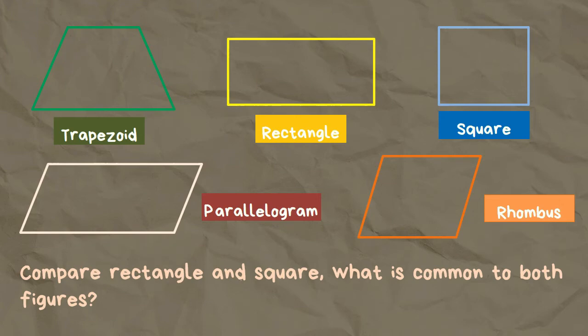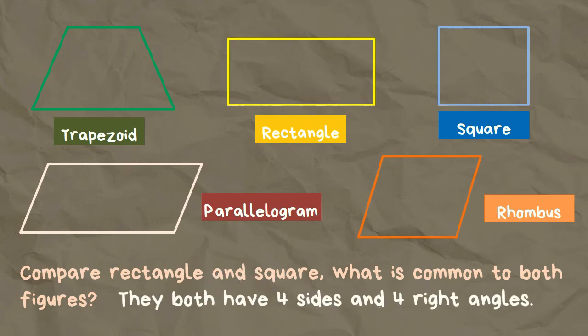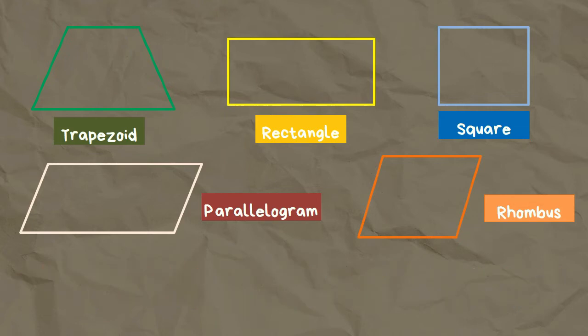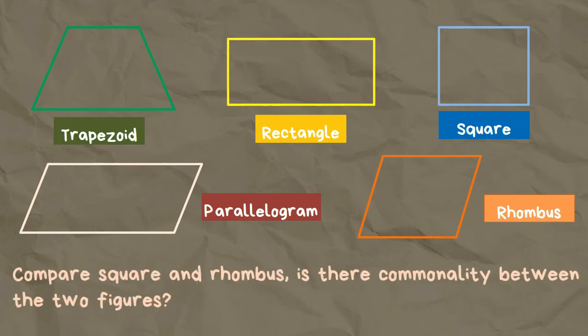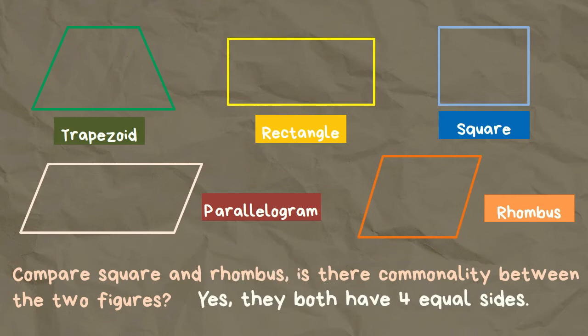Compare rectangle and square. What is common to both figures? They both have four sides and four right angles.